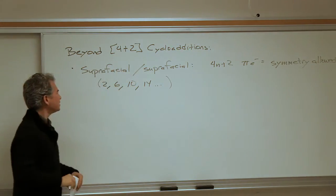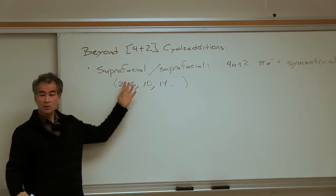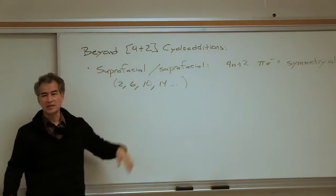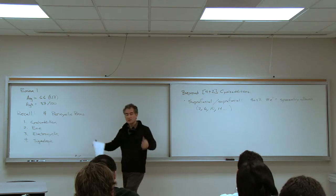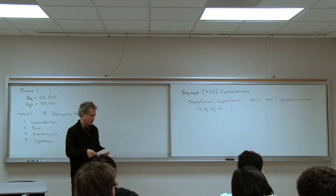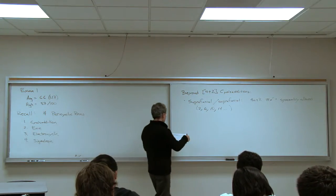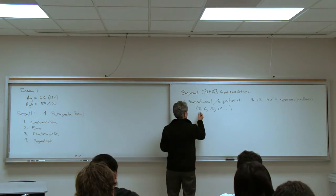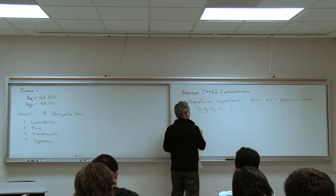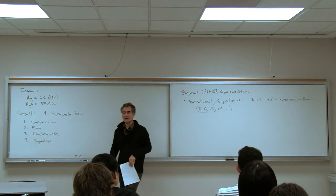Reactions where there are 2, 6, 10, or 14 total pi electrons are symmetry-allowed in a superfacial-superfacial manner. But they're only commonly seen in the 2-electron and 6-electron processes. In theory you can have a 10-electron or 14-electron process, but you're not going to use those reactions or see them in the lab, so we're not going to spend time on that.